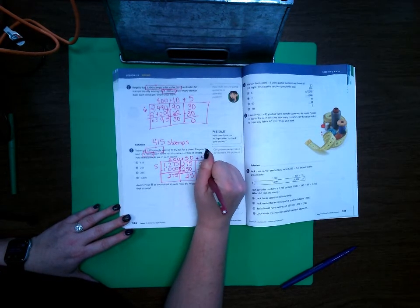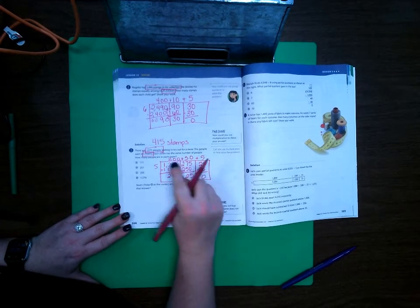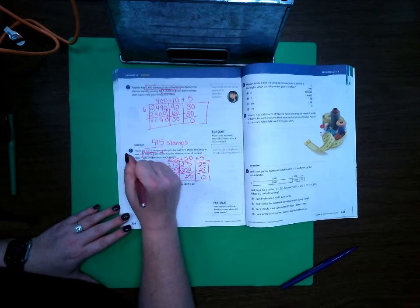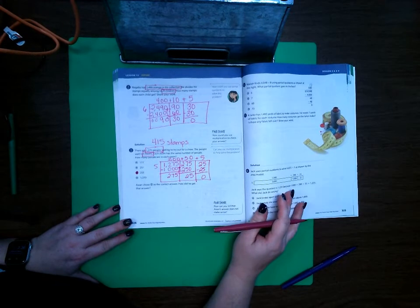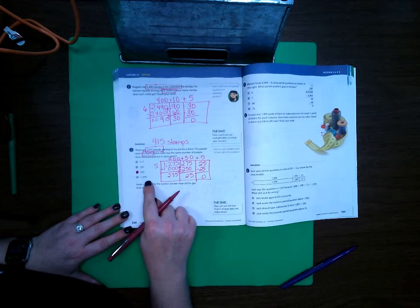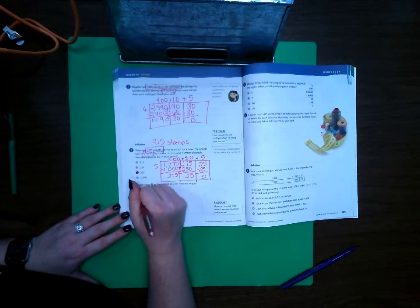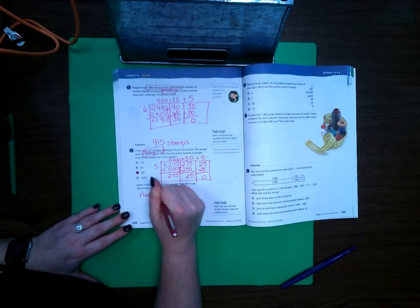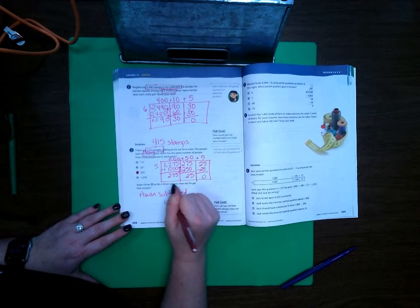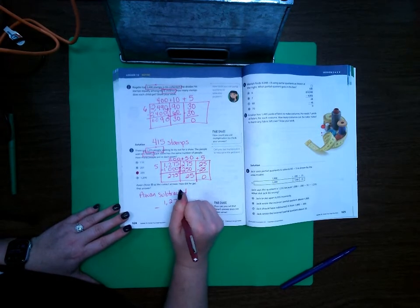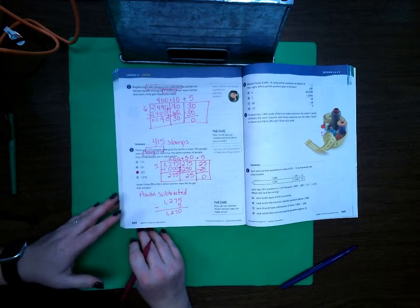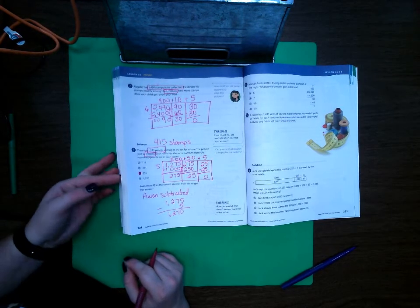Now bring my 25 up. 5 times 5 is 25 with 0 left over. So 200 plus 50 plus 5 equals 255. A1 chose D as the correct answer. How did he get that answer? A1 subtracted 1,275 minus 5 to get 1,270. That is how he is wrong. Let's go ahead and move to page 325.